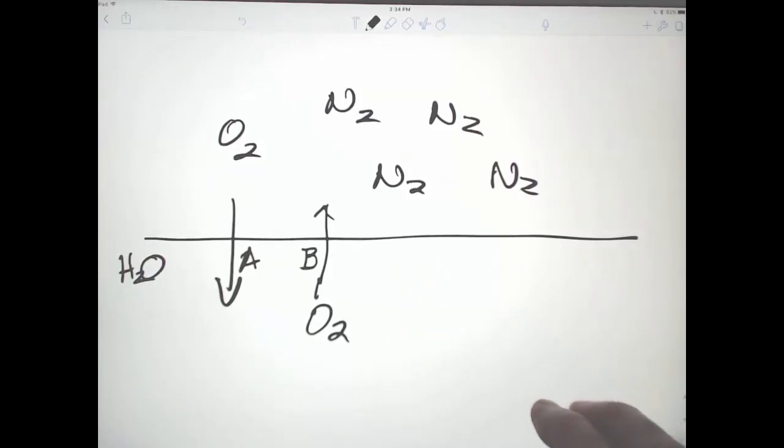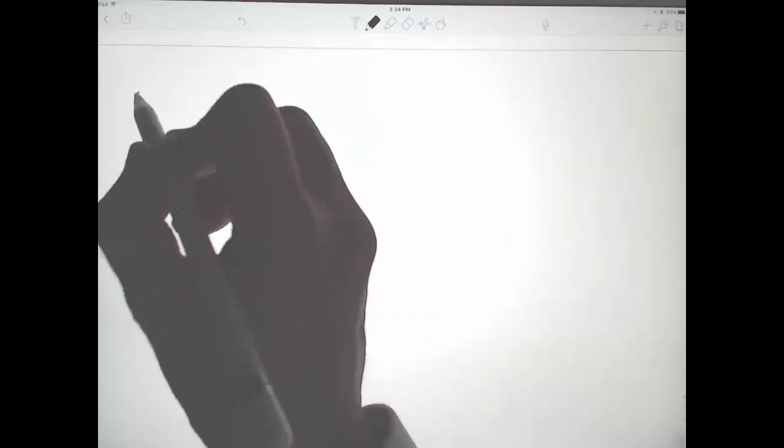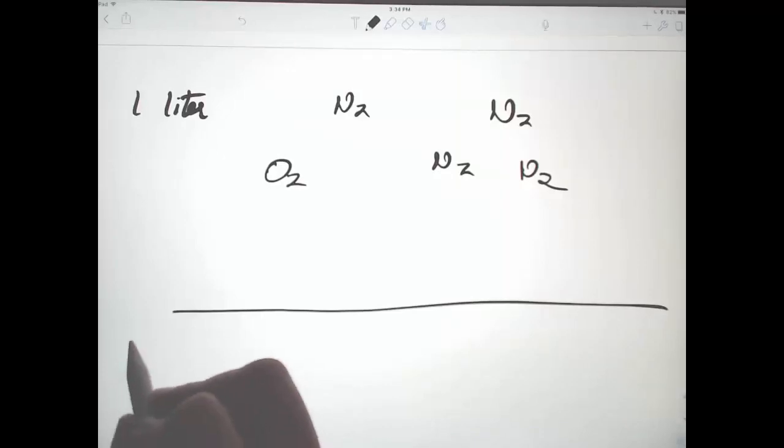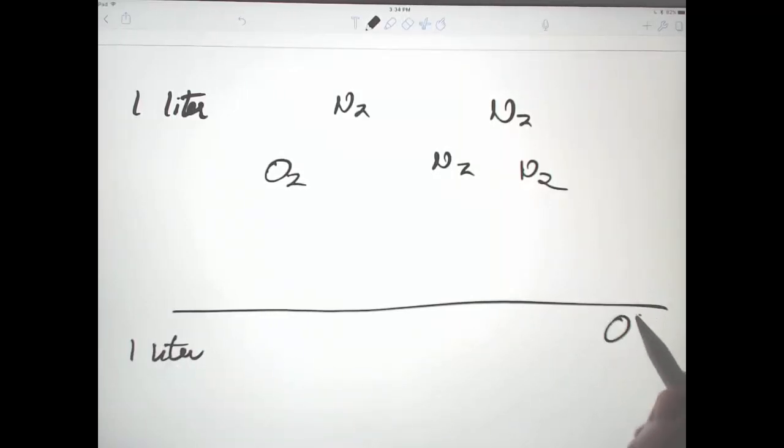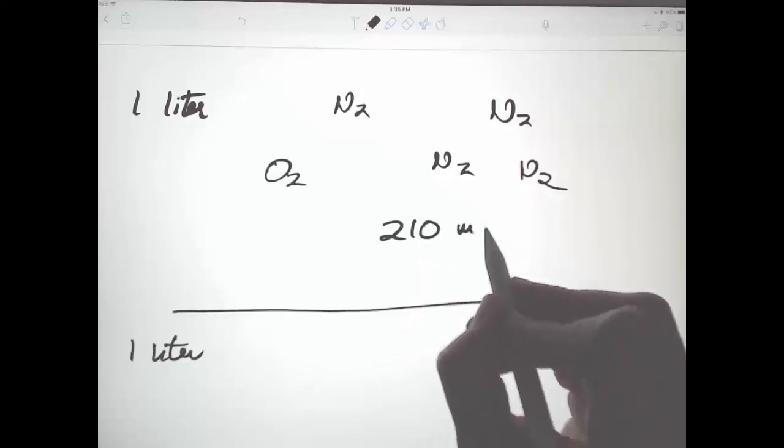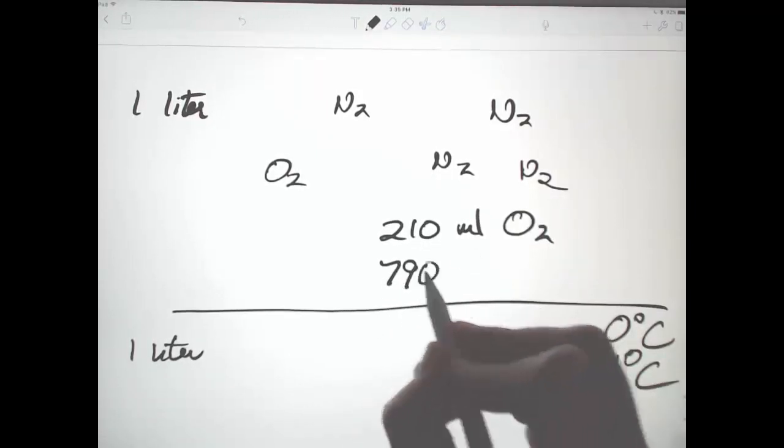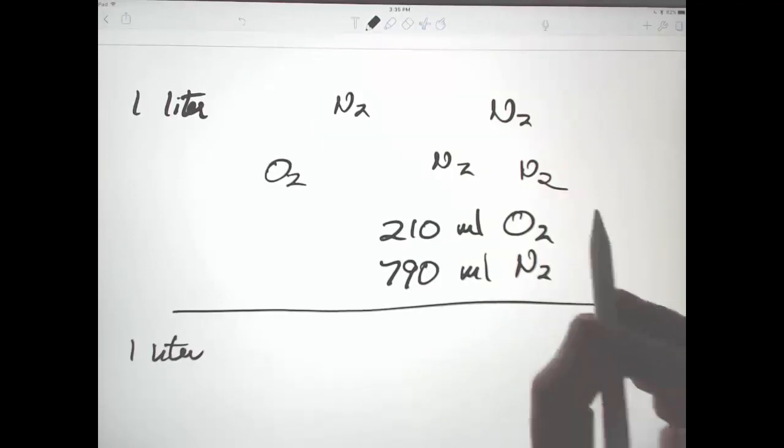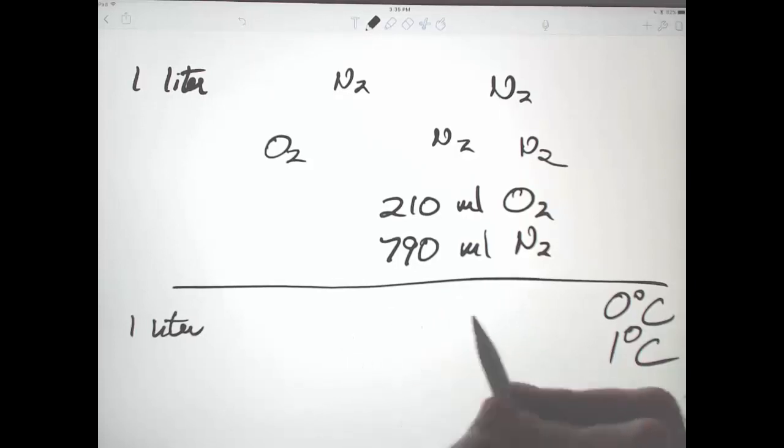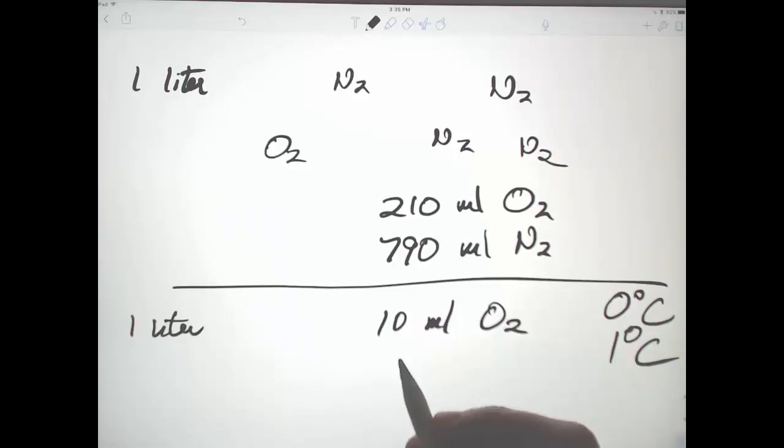So if we had one liter of gas above one liter of water, and we were at zero degrees centigrade, or just above, say, one degree centigrade, then in the liter up above, we'd have 210 mL of oxygen and 790 mL of nitrogen, together forming one liter with a trace amount of carbon dioxide. But in the water, at this cold temperature, we'd only have 10 mL of oxygen, and we'd have a higher proportion of nitrogen, which we won't talk further about.